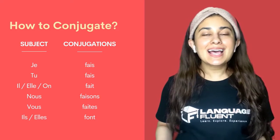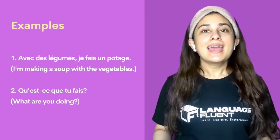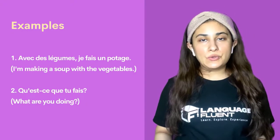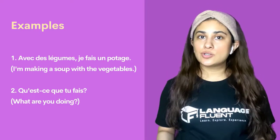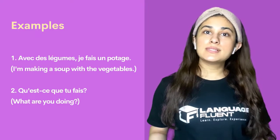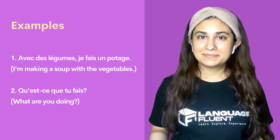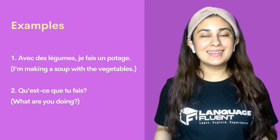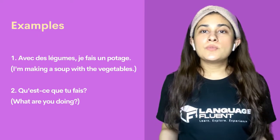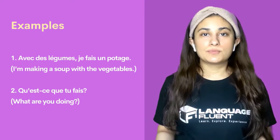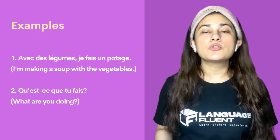Now that the conjugations are clear, let's have a look at a few examples for better understanding. Here comes the first example: Avec des légumes, je fais un potage — with vegetables, I am making a soup. Here the context is to make. The next one: Qu'est-ce que tu fais? Which means what do you do? Here the context is to do.